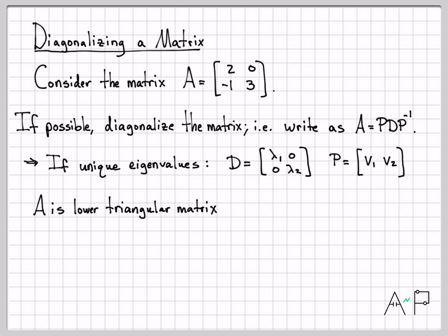Note that A is a lower triangular matrix. All of the nonzero values are on or below the diagonal. That means the eigenvalues are just the diagonal entries. That means lambda 1 is 2 and lambda 2 is 3. So we know what the diagonal elements are for our D matrix now. We know that D should be this 2 by 2 matrix right here. All right, that part's done.